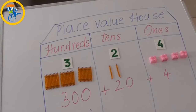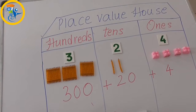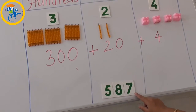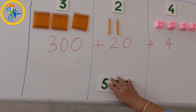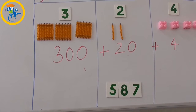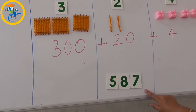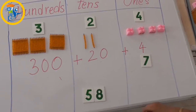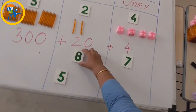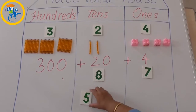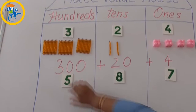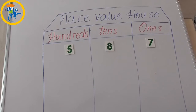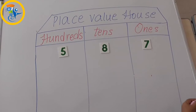Let us understand with one more example — the number 587. This is a 3-digit number, and as per the rule of our place value house, only 1 digit can be placed in 1 room. So 7 goes at the ones place, 8 goes in the tens room, and 5 goes in the hundreds room. Now let us understand the value of 7 at ones.